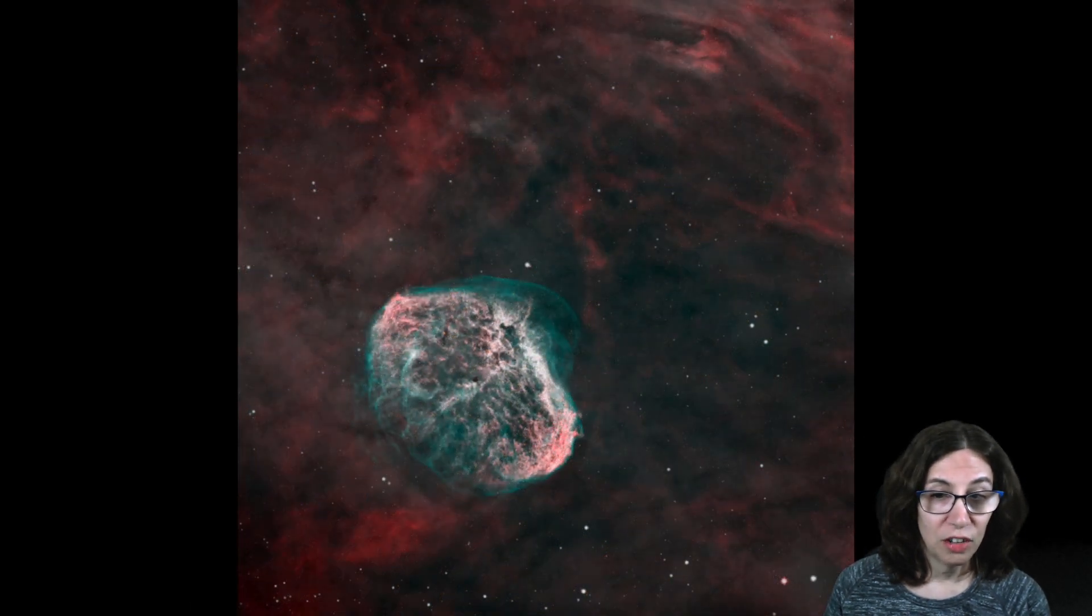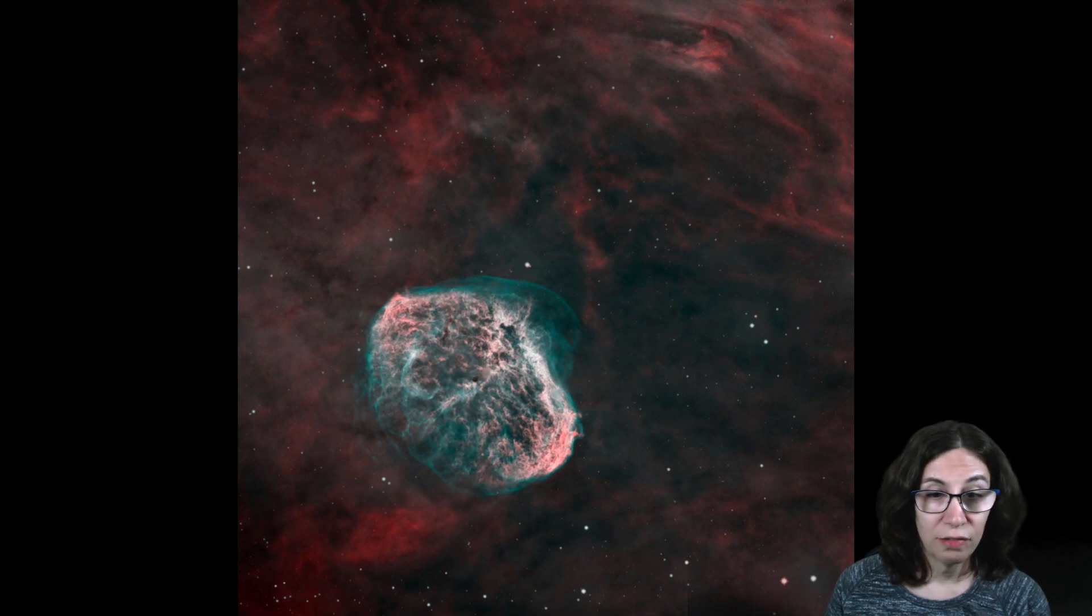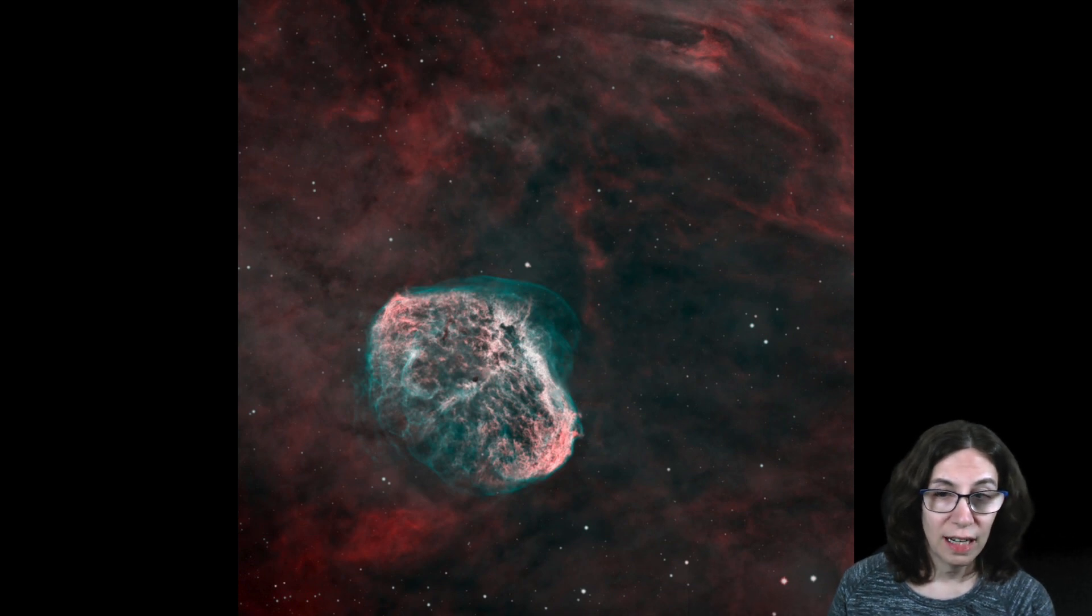The 2021 image is a narrowband image in HOO. That is, hydrogen alpha is in red, and oxygen 3 is in green and blue. This approximates the natural colors, as hydrogen alpha emissions are red and oxygen 3 emissions are a teal color.